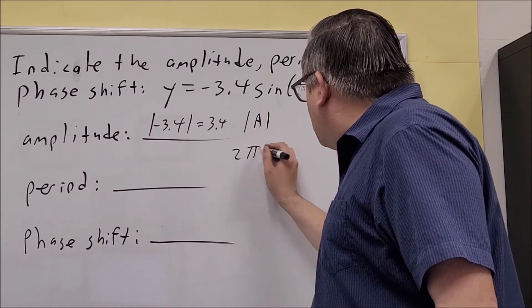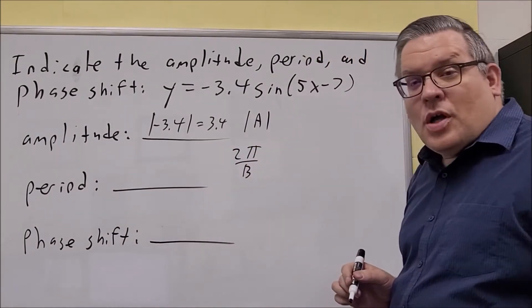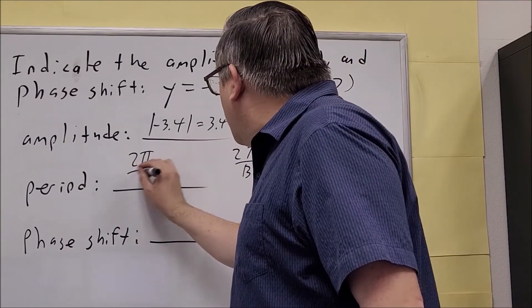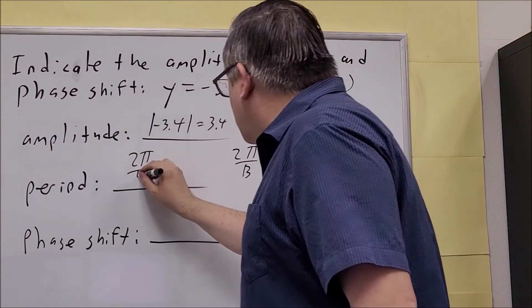Okay, now period, the formula for period is 2π over B. In this case, we're going to do 2π over the B, which is 5.